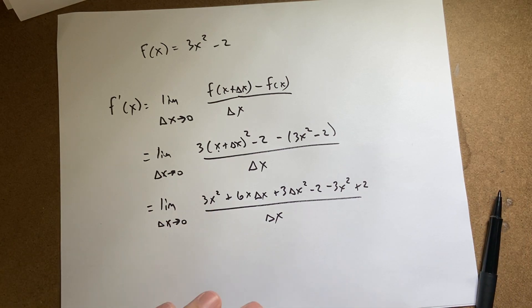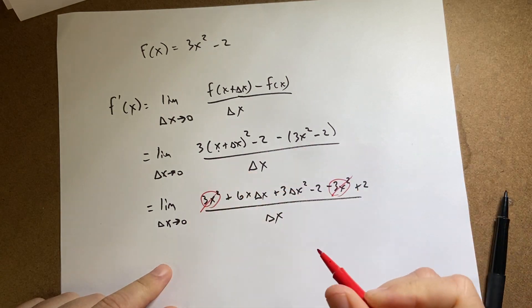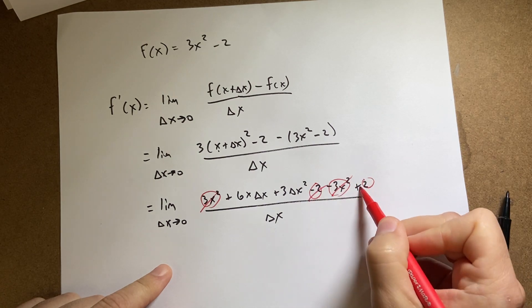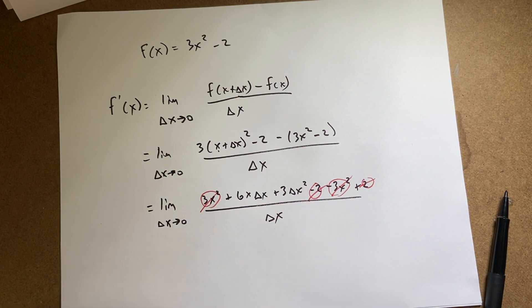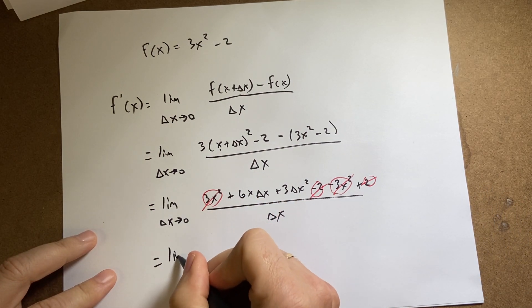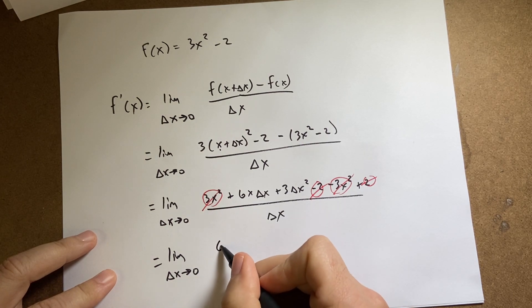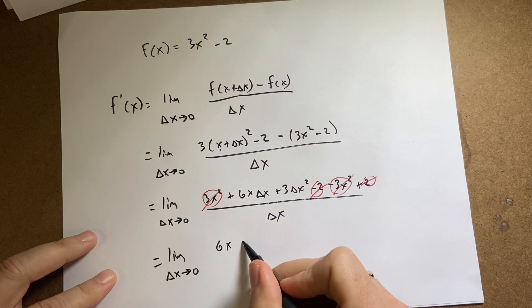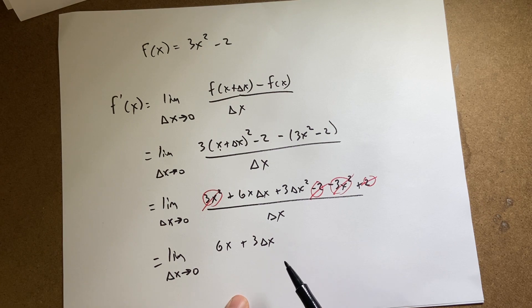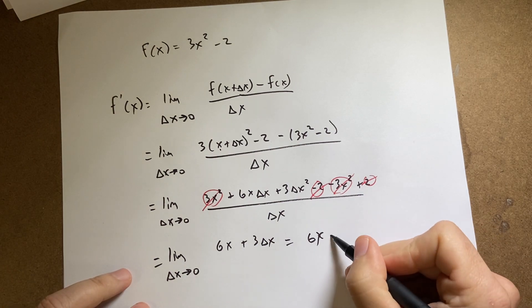Now, I do get some cancellations here. So, I have a 3x squared, I have a minus 3x squared. I have a minus 2 and I have a plus 2. So, and then everything here has a delta x in it. So, I can divide both of these terms by delta x and I get equals the limit as delta x goes to 0 of 6x plus 3 delta x. Now, I can put in delta x equals 0 and I get 6x. And that's it. That's f prime of x.